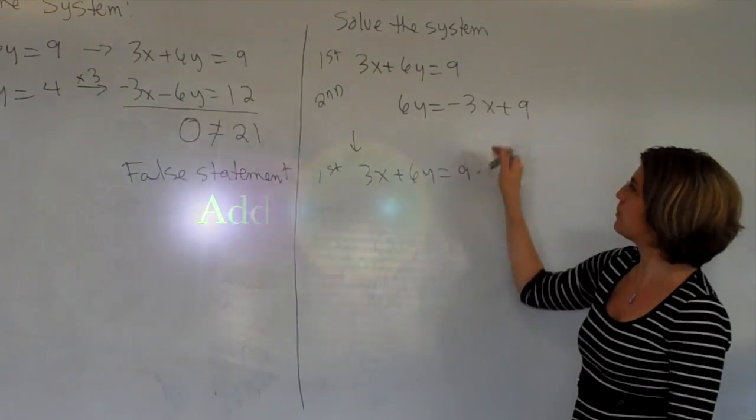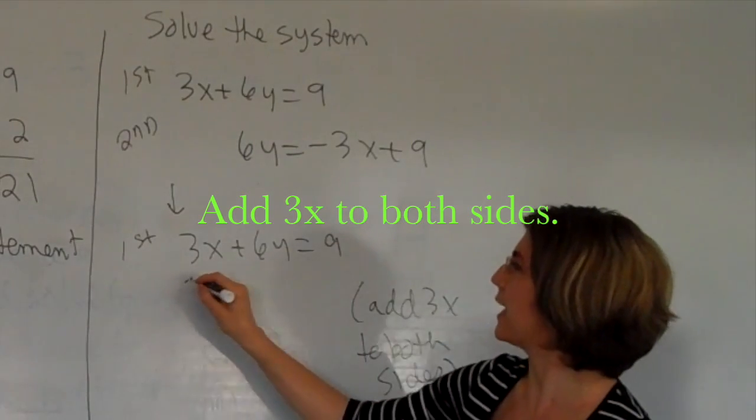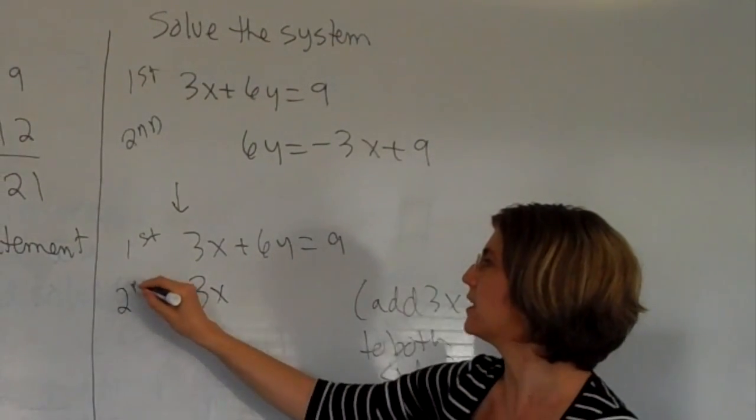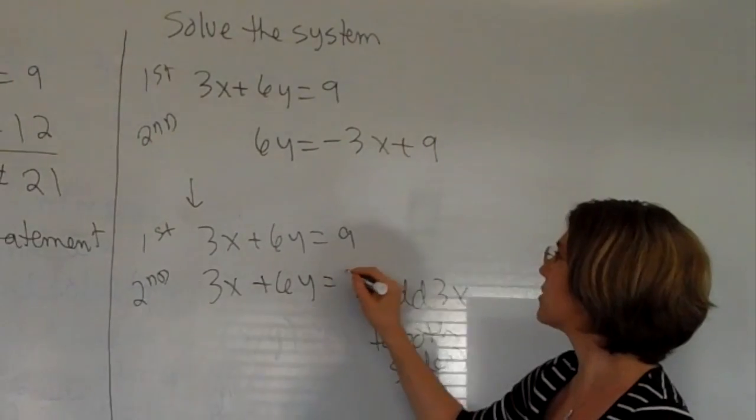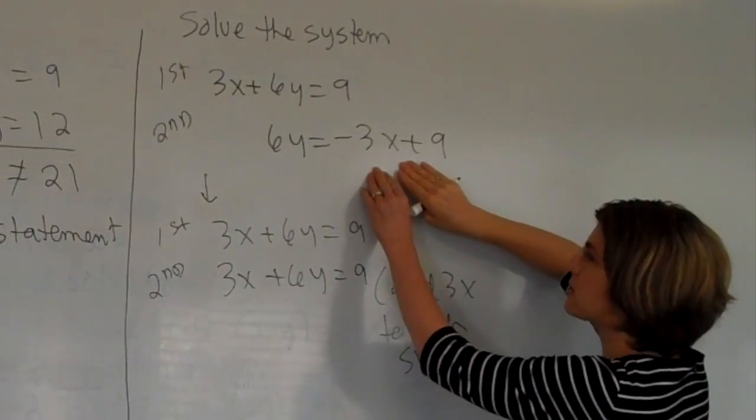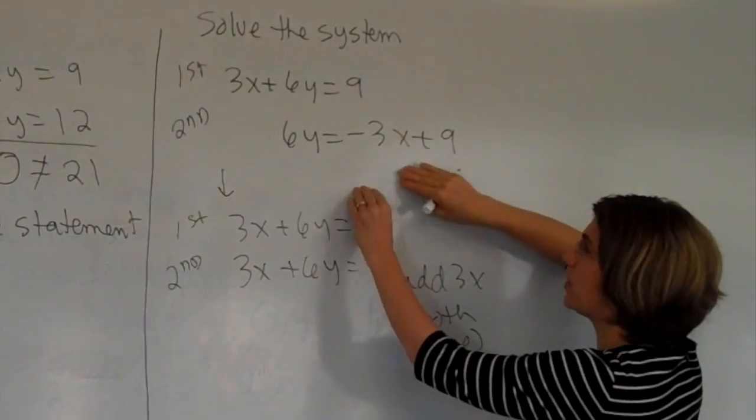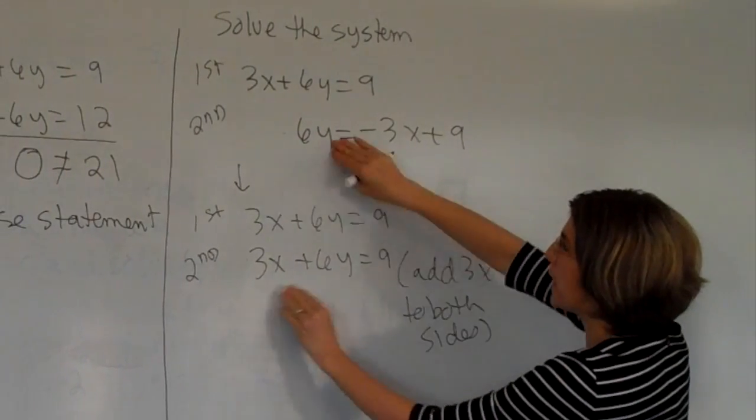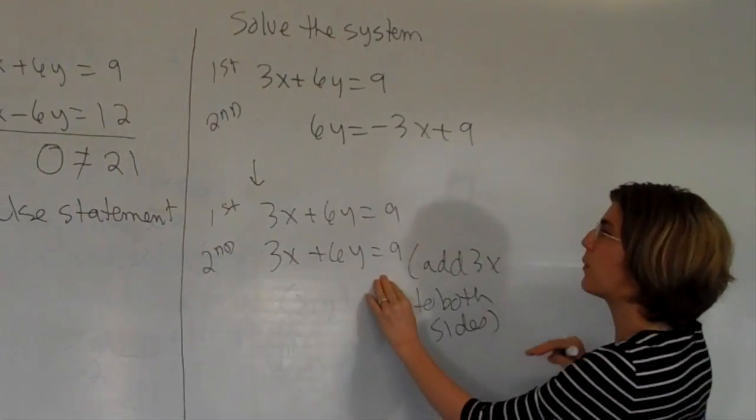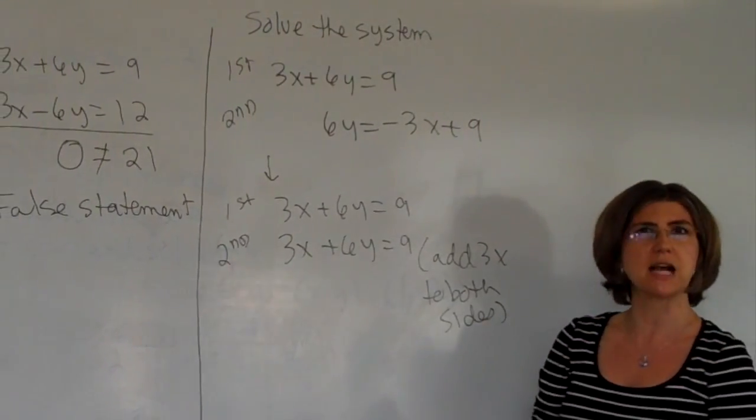Here I'm going to add 3x to both sides. I do that. I get 3x. This is my second equation. Plus 6y equals 9. Let's see if that's true. We add 3x over here, and that gets 0. We add 3x over here, and we get 3x, and then the 6y and the 9 stay where they are. Well, look at that. That's the exact same equation.